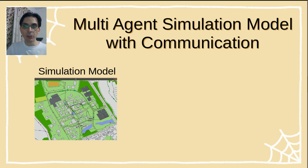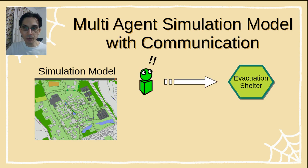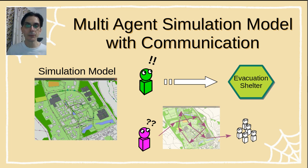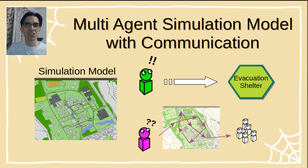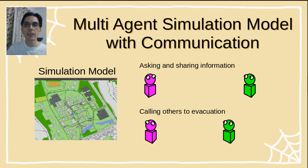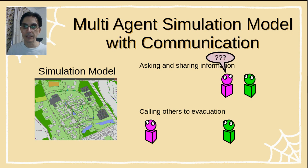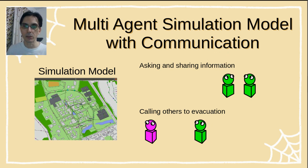Each agent in our simulation model either knows where they need to go, or they do not. If they know, they move efficiently towards the shelter. If they do not know, they try to follow other agents nearby, or they just walk around. The model also allows the agents to talk to each other and share information. Each agent can ask others for directions, they can give information if they know it, and they can listen to other agents talking to each other.